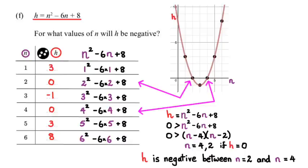If you guys look back at the graph now, see that blue part right there? That's where h is negative, between when n equals 2 and n equals 4. And that's how you answer this question. All right guys, thanks for watching.